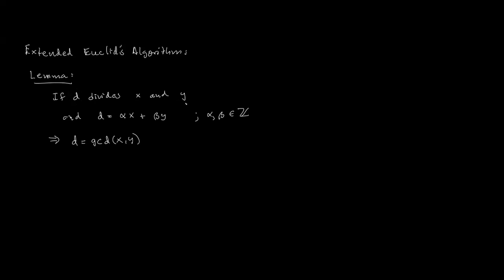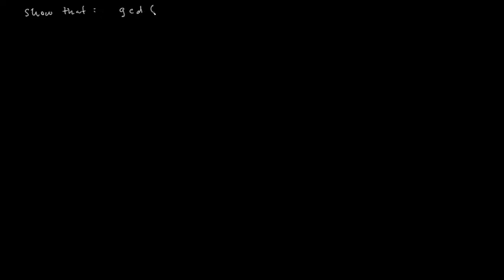So if I know d is a common divisor of x and y, and there exist integers alpha and beta such that alpha*x plus beta*y equals d, then d is the GCD of x and y. We want to formally show that GCD(x, y) can be written as alpha*x plus beta*y for integer alpha and beta. We'll prove this by induction on the size of x and y.